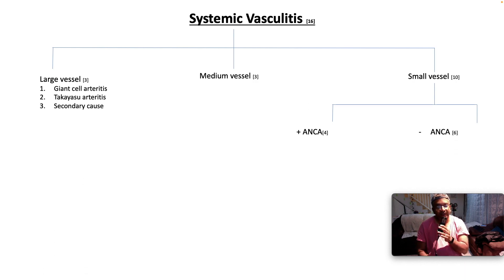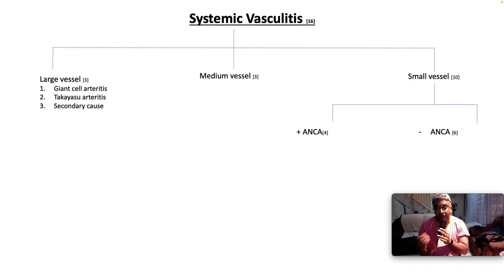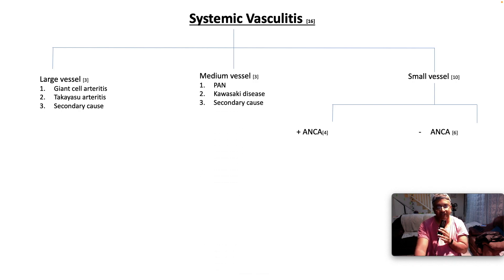Large vessel vasculitic syndromes: giant cell arteritis tends to affect elderly folks, usually with a high ESR, and they complain of headache and jaw claudication. Takayasu's affects younger to middle-aged females and is known as the pulseless disease — that affects the large vessels — along with a whole variety of secondary causes.